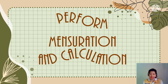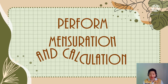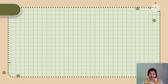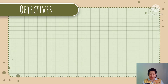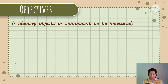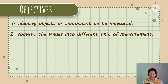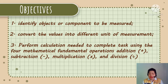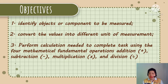Our topic for today is Module 6, Perform Mensuration and Calculation. Here are the objectives that you will be able to meet at the end of the lesson. Number 1: Identify objects or components to be measured. Number 2: Convert the values into different units of measurement. And Number 3: Perform calculation needed to complete tasks using the 4 mathematical fundamental operations — Addition, Subtraction, Multiplication, and Division.